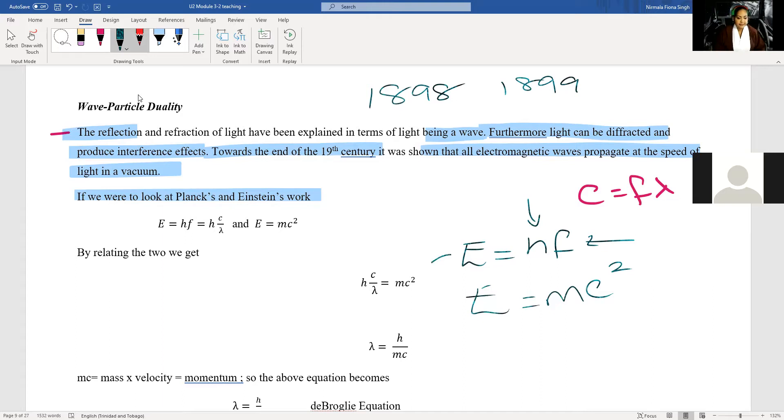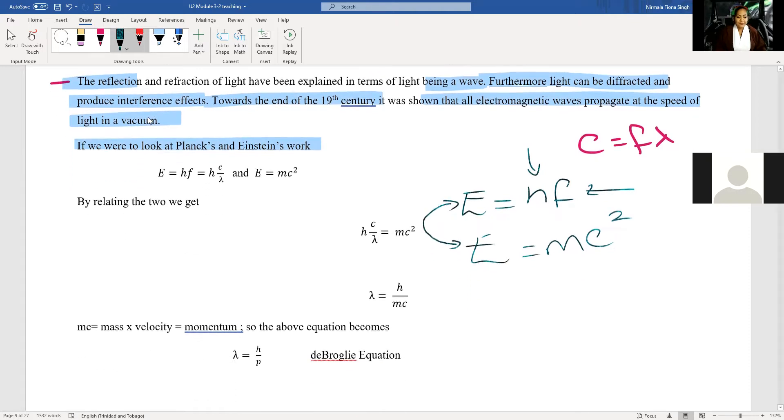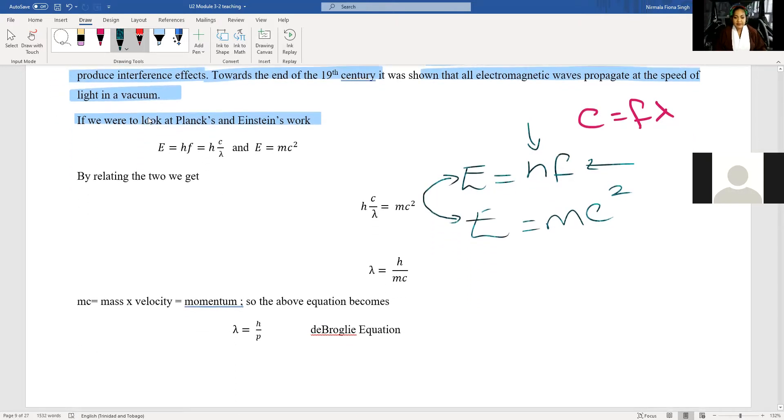Now, if we were to look at Planck's and Einstein's work, we are going to come together and smash our equations together. So we're going to have E is equal to HF, which is the energy contained by a wave because H is your constant, F is your frequency of your wave. And then we have our famous E is equal to MC squared, which is the energy of an object or energy of a particle traveling close to the speed of light. And we know when things approach the speed of light, mass is converted into energy.